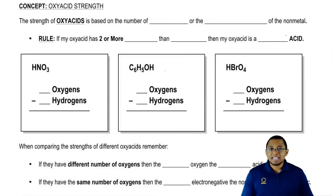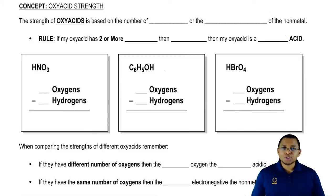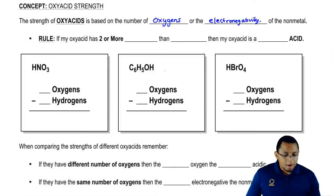Let's take a look at oxyacids. The strength of oxyacids is based on two major factors. First, it's based on the number of oxygens present. And secondly, it's based on the electronegativity of the nonmetal. Now remember, an oxyacid has H, oxygen, and a nonmetal. Those are the three factors that give us an oxyacid.